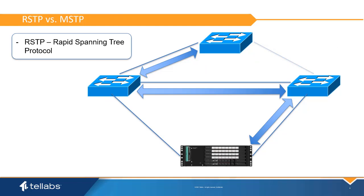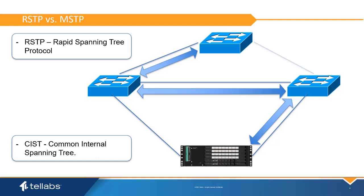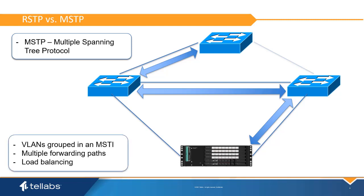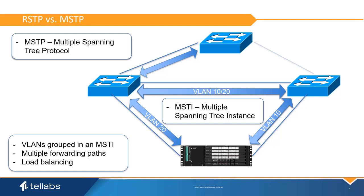RSTP provides rapid convergence of the spanning tree and uses a single CIST, or common spanning tree. MSTP, which uses RSTP to provide rapid convergence, enables VLANs to be grouped into a spanning tree instance, provides multiple forwarding paths for data traffic, and enables load balancing. MSTP essentially allows multiple logical spanning tree instances to run over the same set of physical links. Each instance is known as an MSTi, or multiple spanning tree instance, and runs its own RSTP state machine. Rather than blocking all VLAN traffic on a port, MSTP only blocks traffic at an MSTi. It can co-exist with STP, and the MSTi0 is the standard CIST. If MSTP is not configured, by default all configured VLANs are in the CIST.